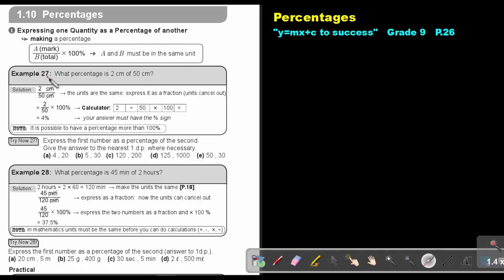Example 27. What percentage is 2 cm of 50 cm? So just write the 2 over the 50. Because the units are the same, they cancel out. Then multiply by 100%. And then I'm getting an answer of 4%. Your answer must have the percentage sign. It is possible to have a percentage more than 100%. Keep it in mind.